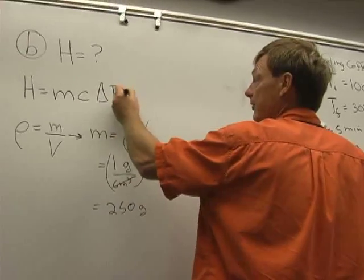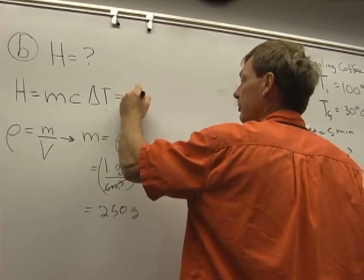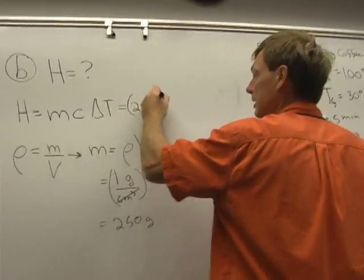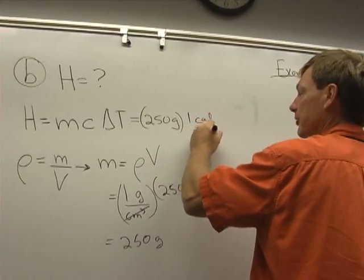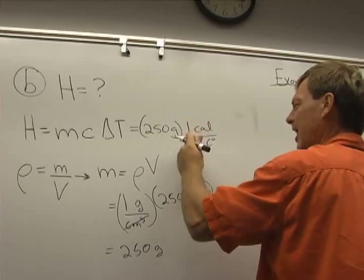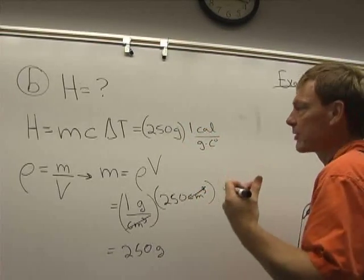So the thermal energy is the mass, which is 250 grams, times the specific heat of water, which is one calorie per gram per Celsius degree. It takes a calorie to raise a gram of water one Celsius degree.